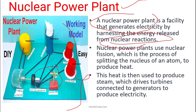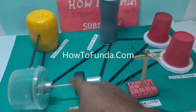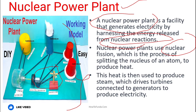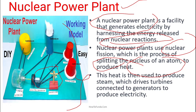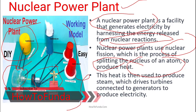Electricity is generated using nuclear reactions. Nuclear reactions involve nuclear fusion, which is a process of splitting the nucleus of an atom to produce heat. Whenever we process nuclear fusion it generates heat.